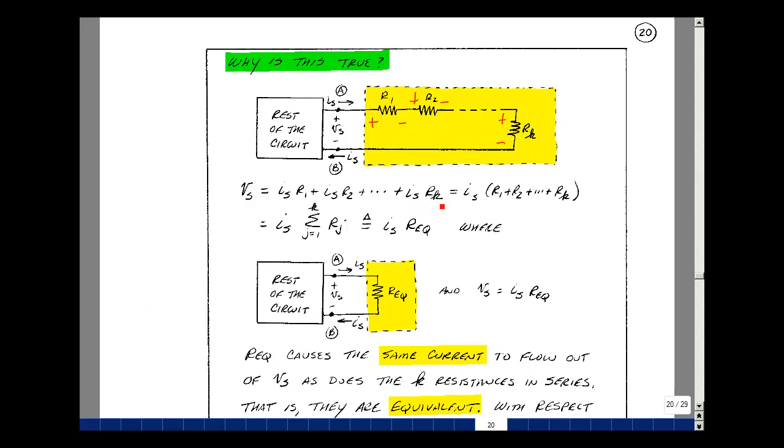And so we'll get a voltage I sub s times R of k. Pull out the I sub s and you have R1 through R sub k added together. And you can write that as a summation of R sub j 1 to k.